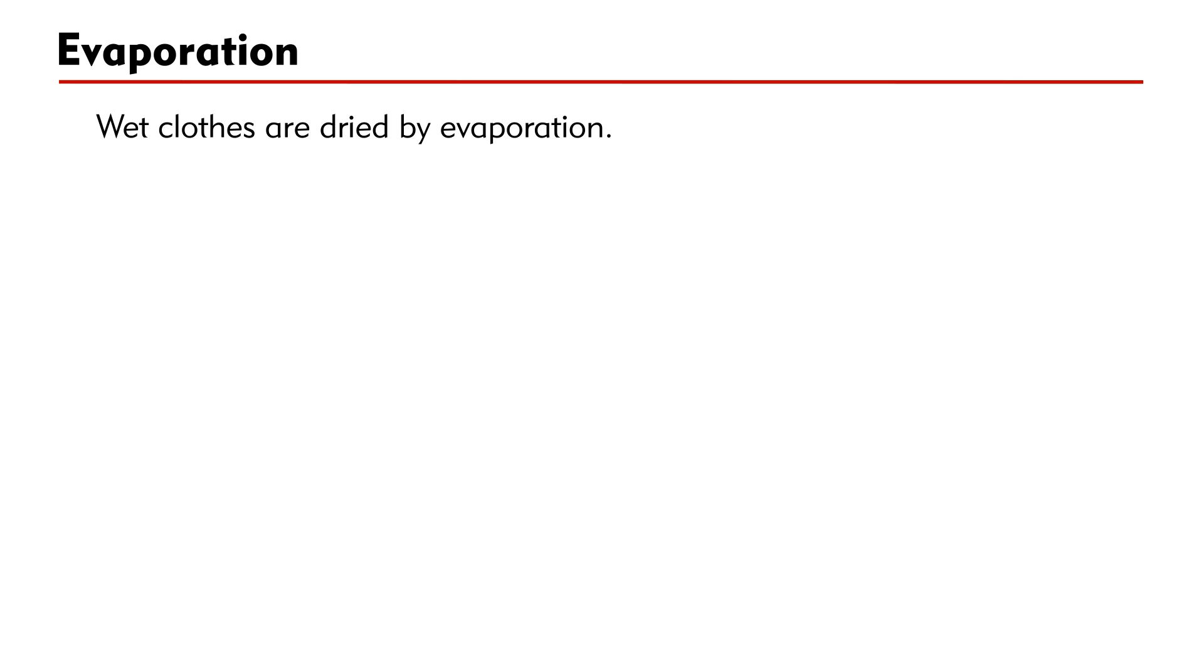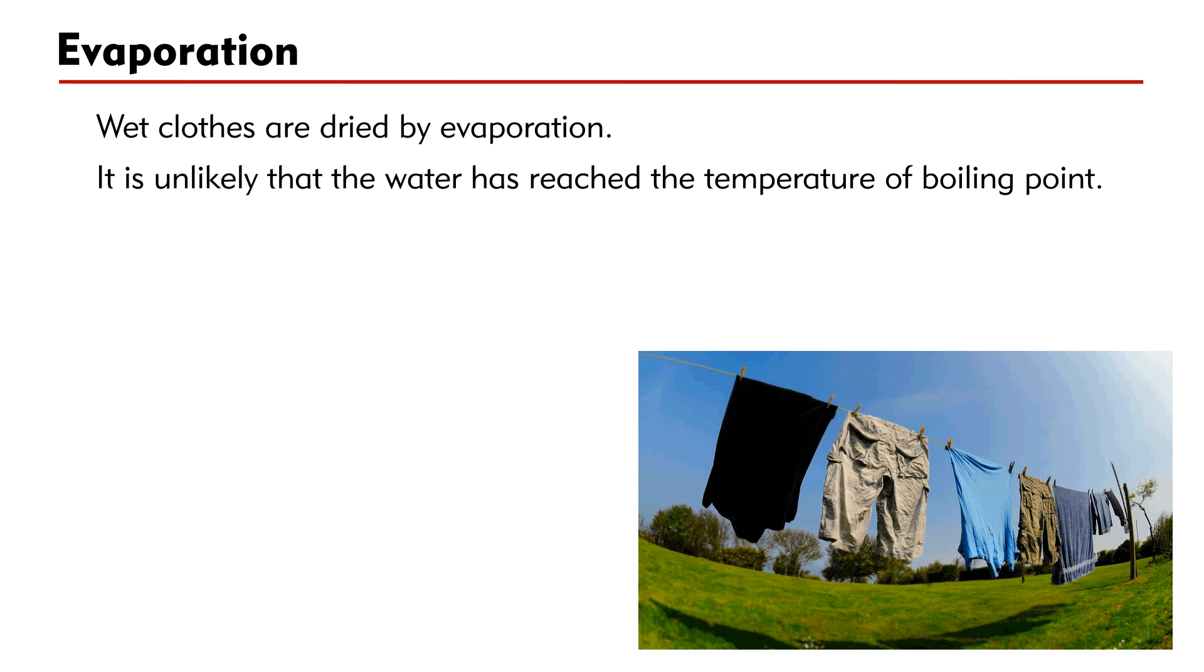Wet clothes are dried by evaporation. Even though the clothes are hung under hot sun, it is unlikely that the water has reached the temperature of boiling point. In fact, wet clothes can be dried indoors. Therefore, we can conclude that evaporation occurs at any temperature.